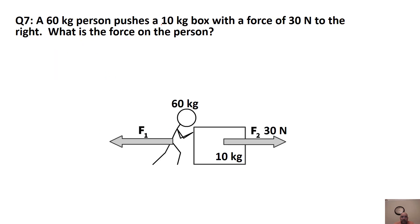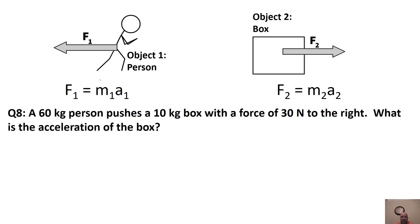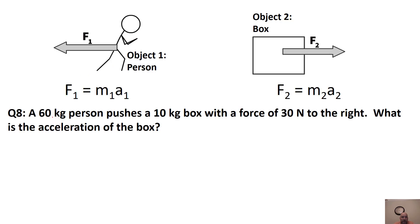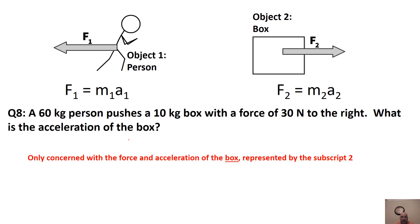A 60-kilogram person pushes a 10-kilogram box with a force of 30 newtons to the right. What is the force on the person? Since the box is being pushed to the right, the person is going to be pushed 30 newtons to the left.